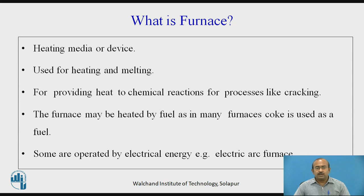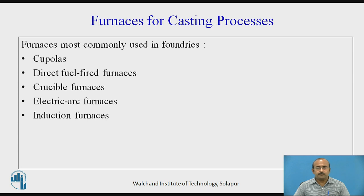Some furnaces are operated by electrical energy — for example, electric arc furnace. Furnaces most commonly used in foundries are cupolas, direct fuel fired furnace, crucible furnace, electric arc furnace, and induction furnace.